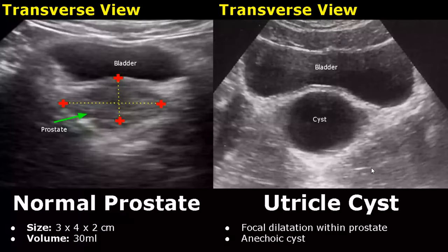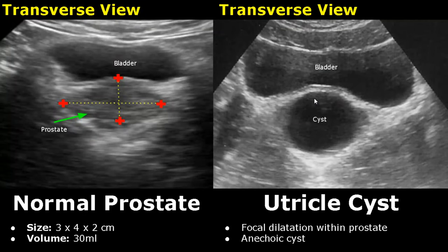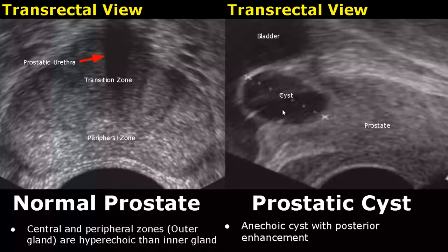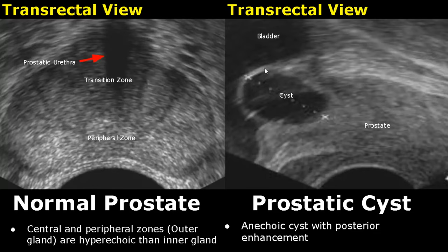A utricle cyst is a focal dilatation inside the prostate and will appear as an anechoic cyst. Here we have a transrectal view showing a cyst — it is anechoic and has posterior enhancement. Thank you so much for watching. Please subscribe and stay tuned for more imaging videos.